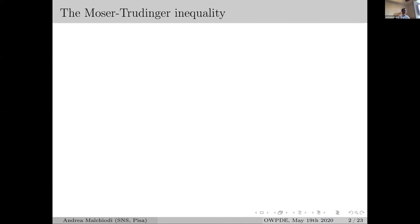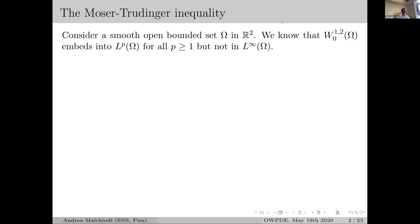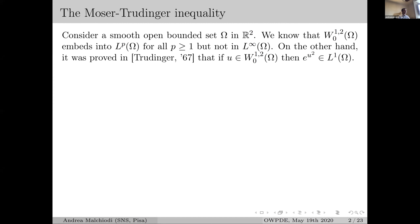Let me recall some basic facts about the Moser-Trudinger inequality. We'll stay all the time in two dimensions. Starting with an open bounded set Ω in R², we know that the Sobolev space W^{1,2}_0 of Ω embeds into any L^p, but not into L^∞ — so almost into L^∞. It was shown by Trudinger that if u is in W^{1,2}_0, then e^{u²} is in L^1.